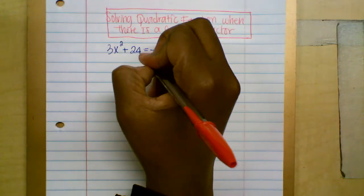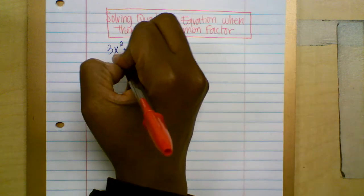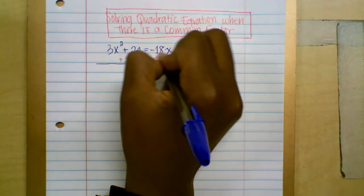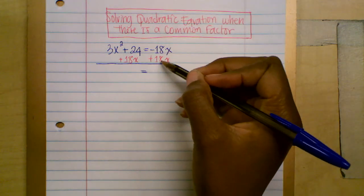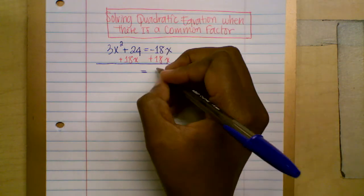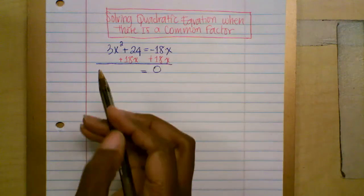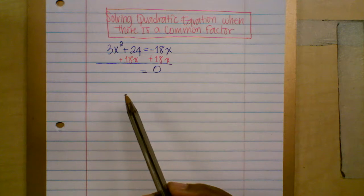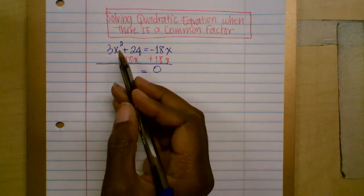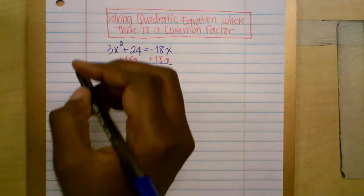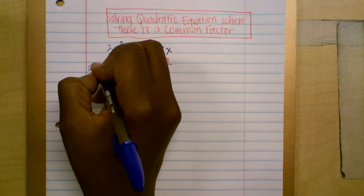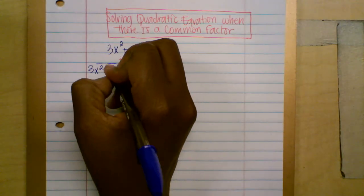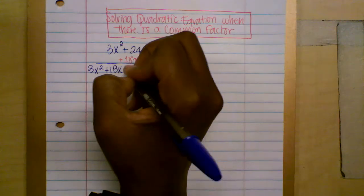You're going to add 18x on both sides. Then negative 18x plus positive 18x add up to zero. Now there are no like terms — do not combine because there are no like terms. So you leave everything alone. Make sure you start with the highest degree term, which is 3x², then plus 18x, then plus 24.